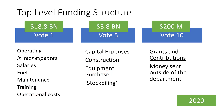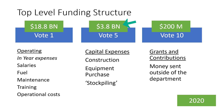These numbers come from 2020 and show you the relative size of the budget within each one of those votes. Vote 1 is the majority of the budget at 18.8 billion dollars. Vote 5 is 3.8 billion dollars, and Vote 10 was 200 million dollars. Now while 200 million is a lot of money, compared to the 18.8 billion and 3.8 billion, it is not. So National Defense is very heavy in Vote 1 and Vote 5.